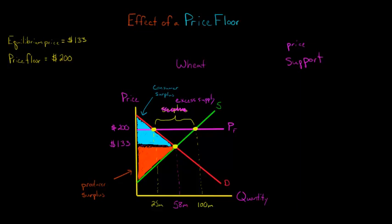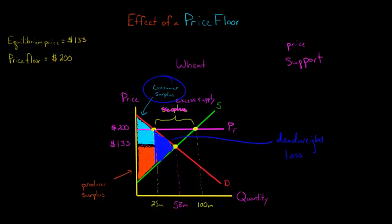Now we're no longer at equilibrium — people are only demanding 25 million tons of wheat. So we're going to have our old friend the deadweight loss, right here. I'm coloring it in — this is all lost value. This dark blue area is no longer going to be consumer surplus or producer surplus. This is our deadweight loss, which is a reduction in total surplus.